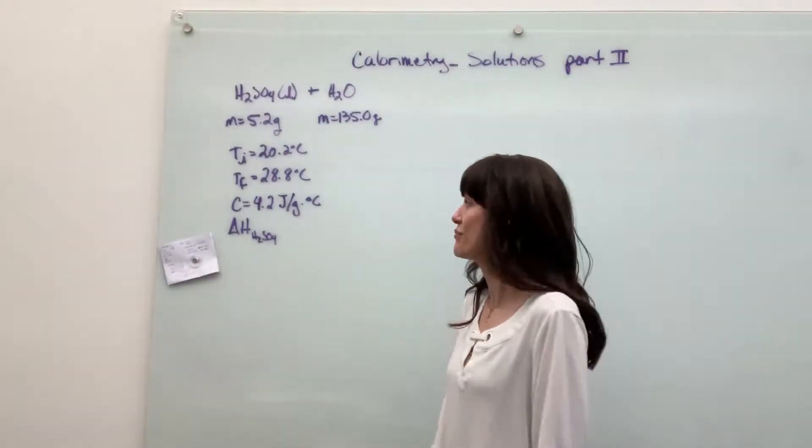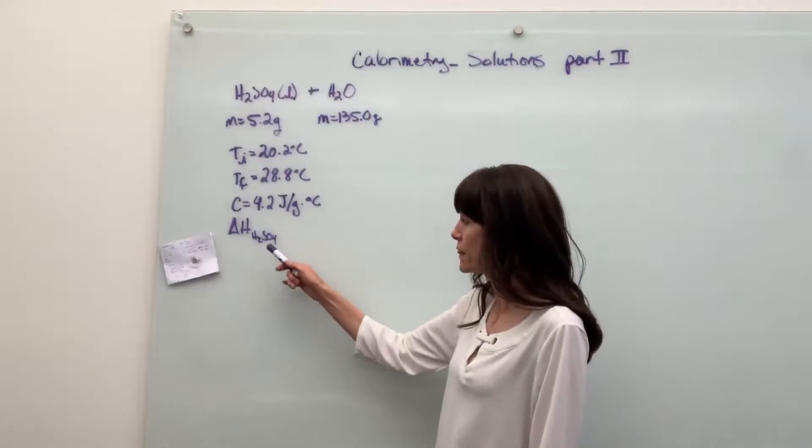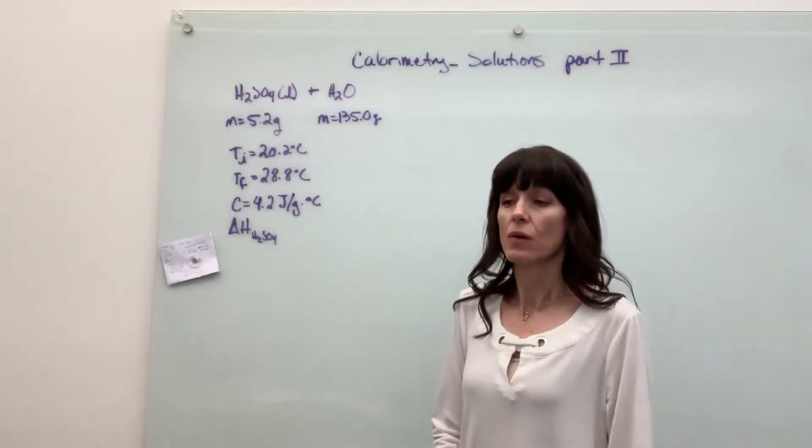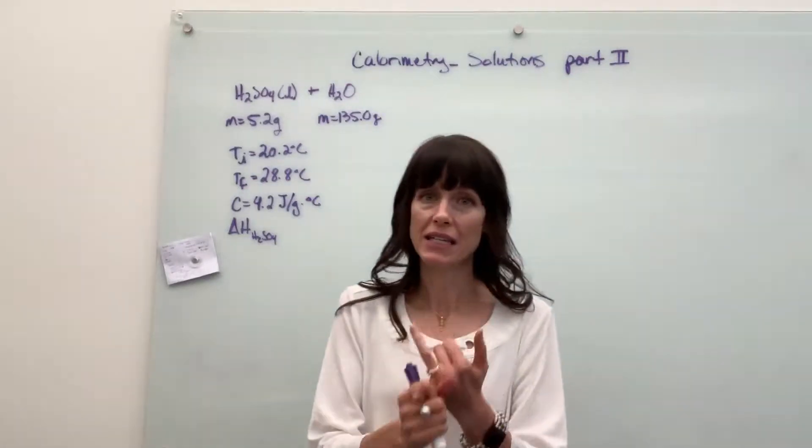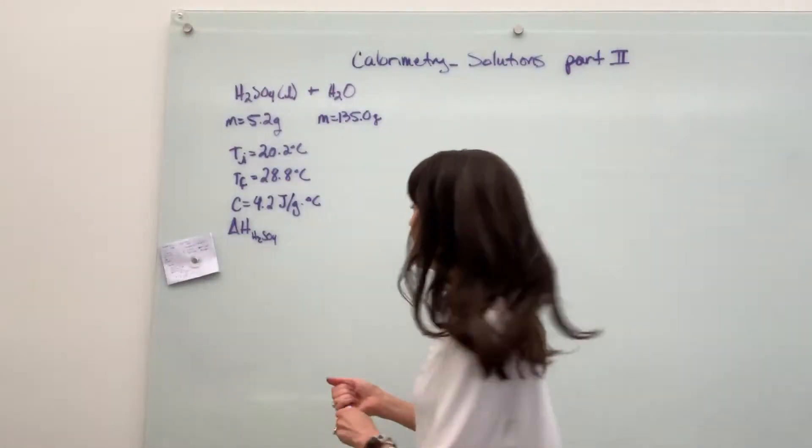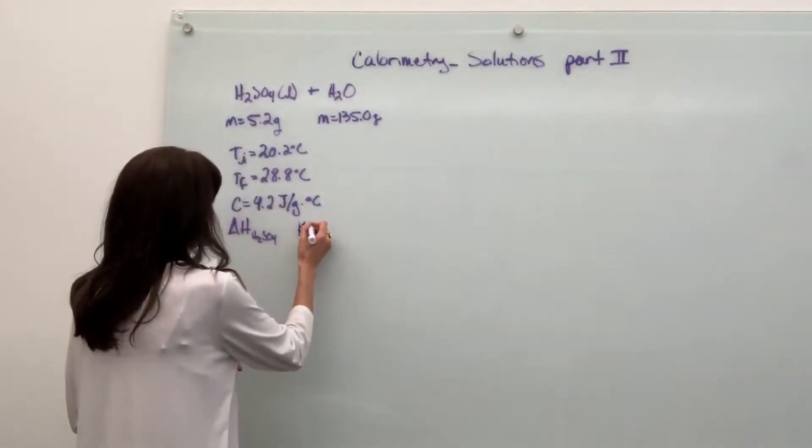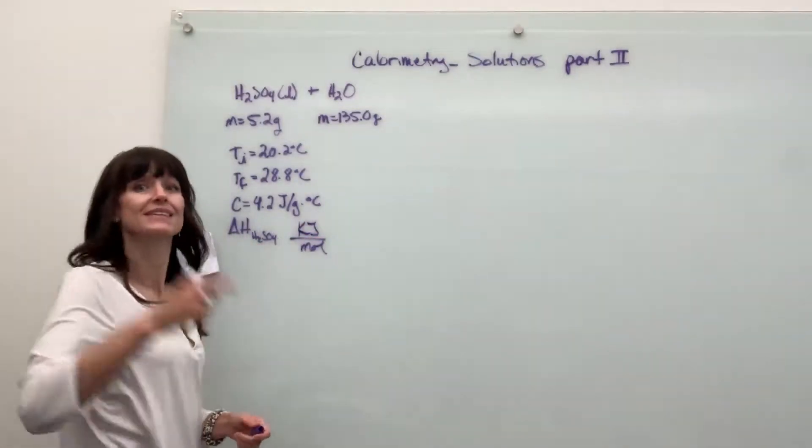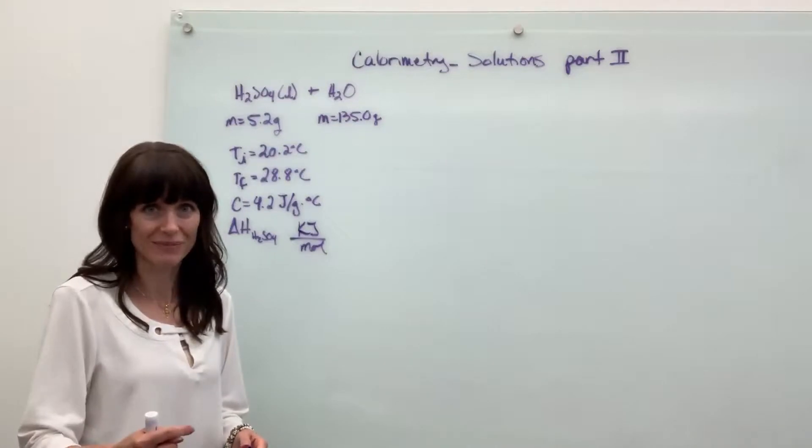And here's the question. What is the enthalpy for that sulfuric acid? So they want us not just to find heat, the Q, but to find the kilojoules per mole. And the mole that we're going to use is the sulfuric acid.